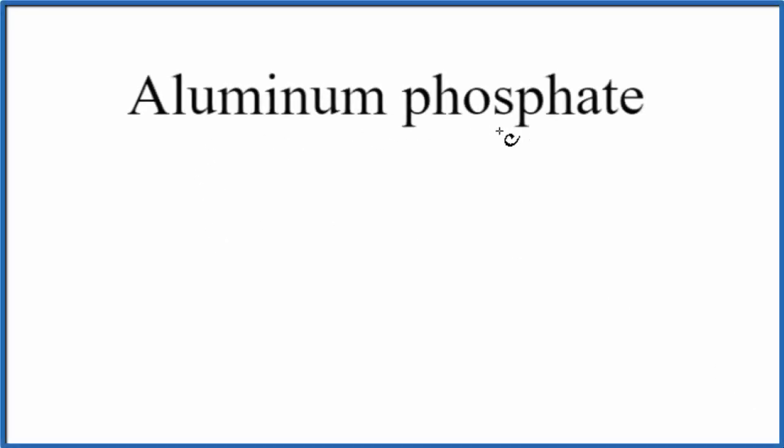To write the formula for aluminum phosphate, we'll first write the element symbols. Aluminum, that's A-L.